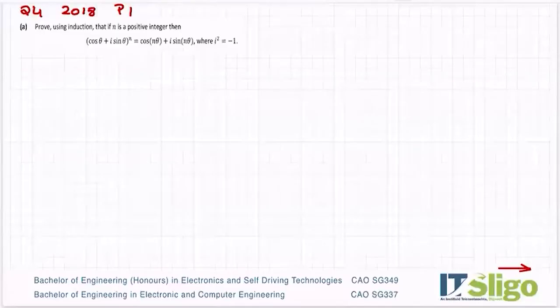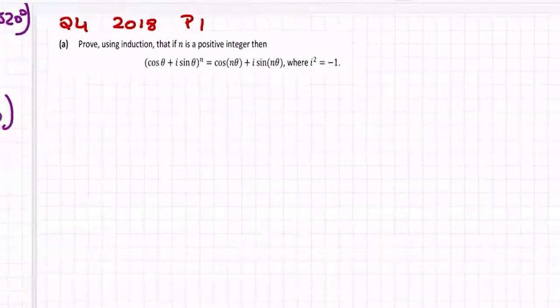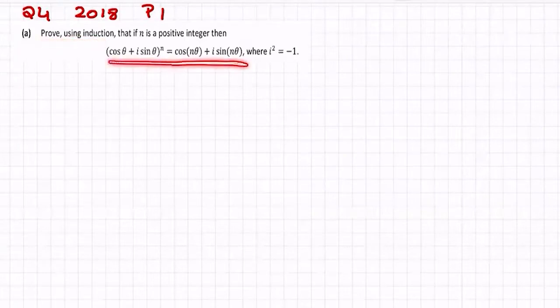Right, let's have a look at this question. Prove using induction that if n is a positive integer then cos theta plus i sine theta to the power of n is equal to cos n theta plus i sine n theta where i squared is minus 1. In other words, prove using induction De Moivre's theorem.